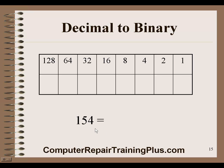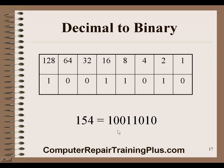How about 154? We're going to need the 128, so we set it. Would we set the 64? 128 plus 64 is 192 — that's too much. How about 32? 128 plus 32 is 160 — still too much. So we set the 16: 128 plus 16 is 144. We still need 10 more, so we set the 8 and the 2, which gives us 10. So the binary equivalent is 128, 16, 8, and 2 — totaling 154.